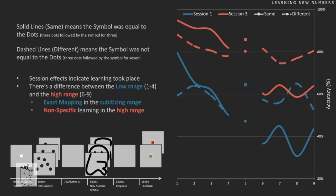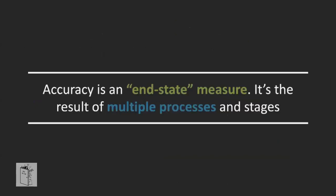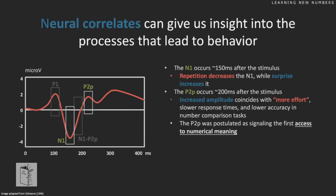There are a lot of variables involved — quantities that are low and high, trials where they say 'same' or 'different.' Accuracy and reaction time are end-state measures — they're the result of a lot of things going on in the brain. We can tell something is happening in the lower range, but we want to know exactly how they're learning and what information they're using. We actually want to know what's going on in the brain, not just what it produces in the end.